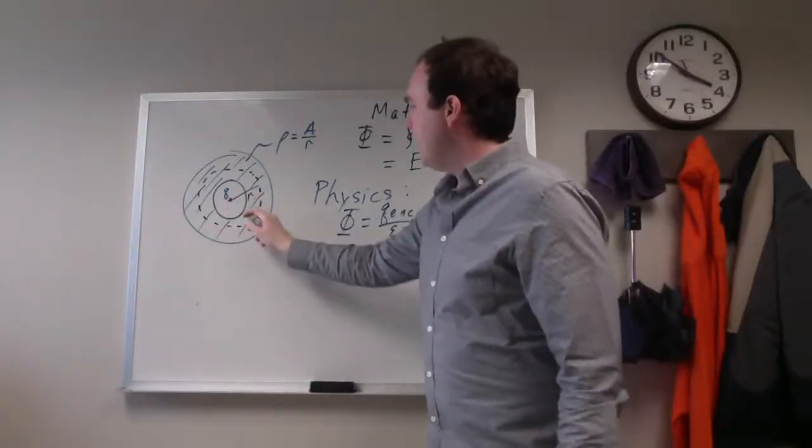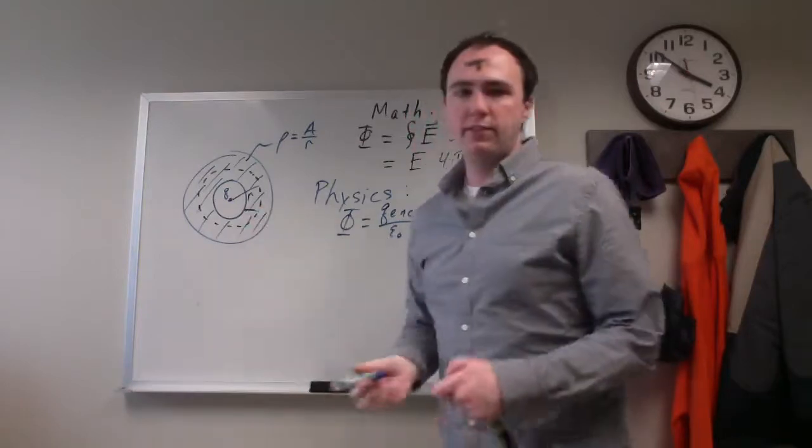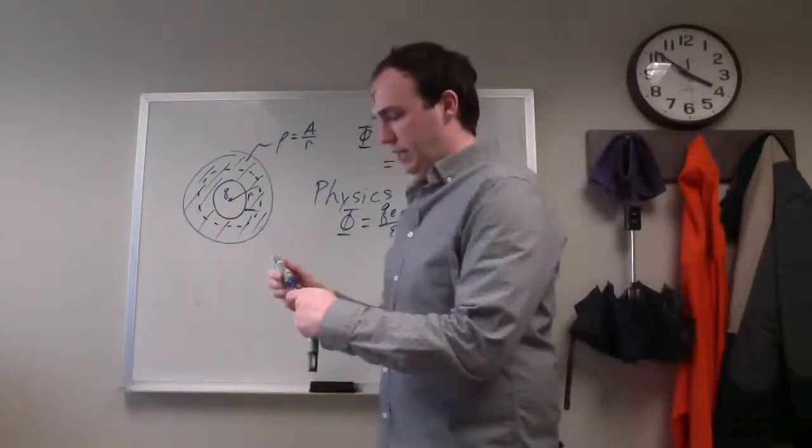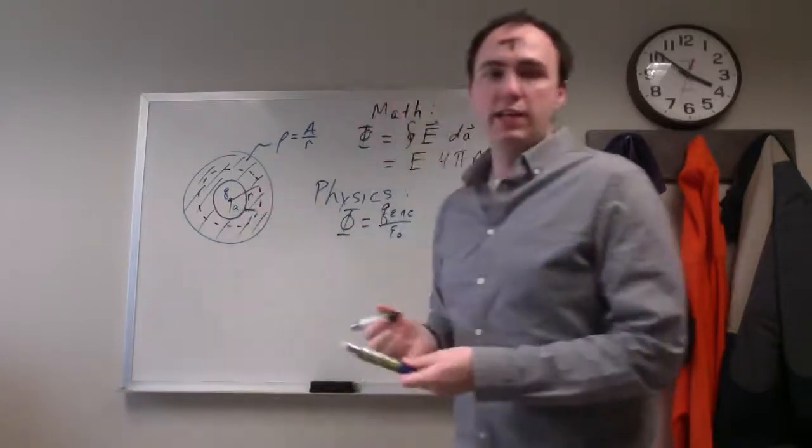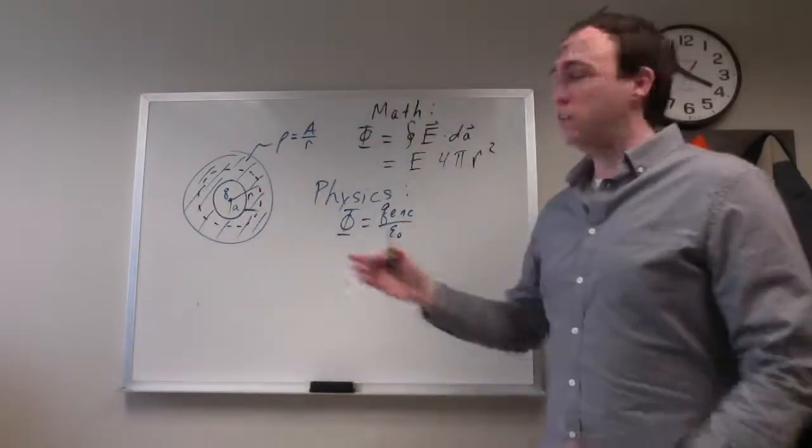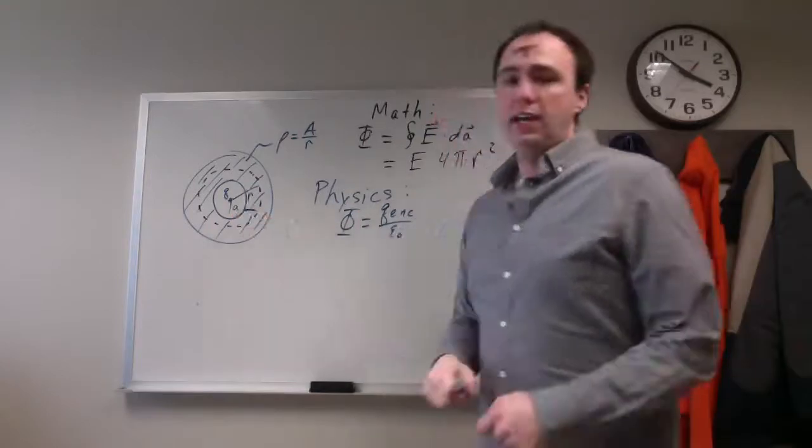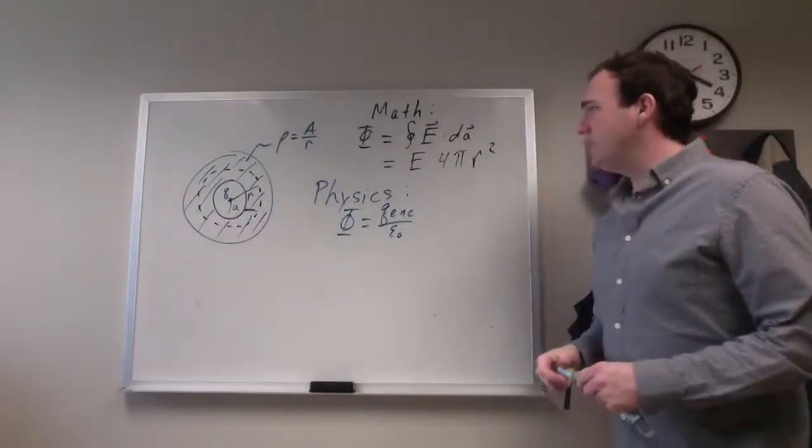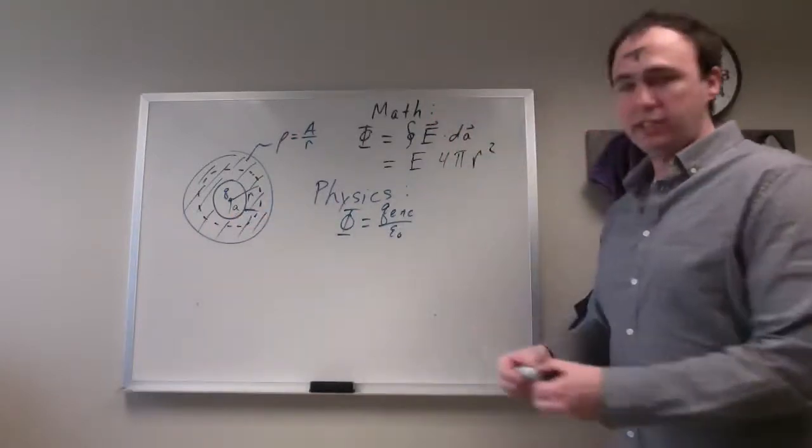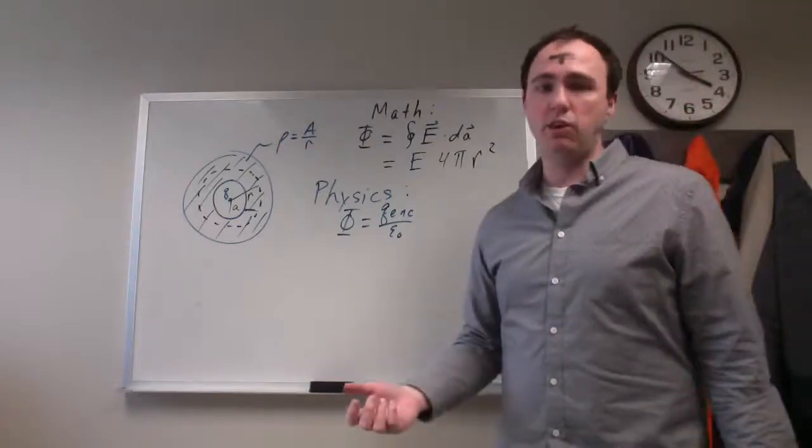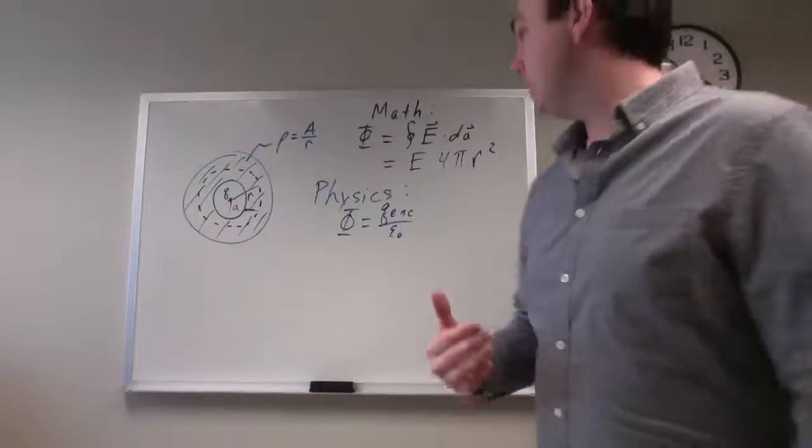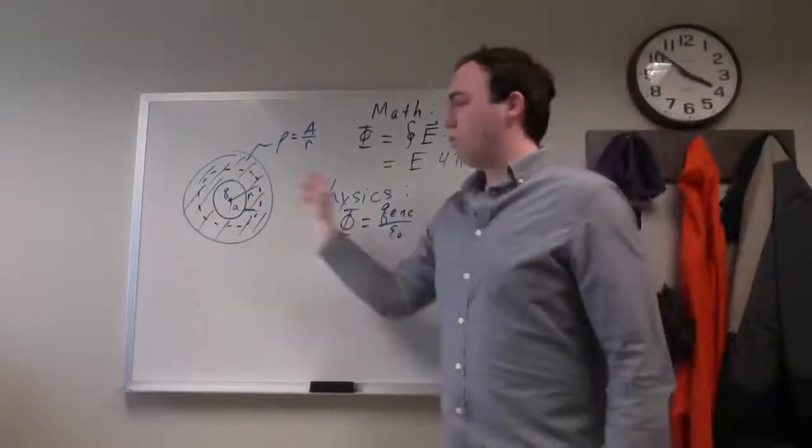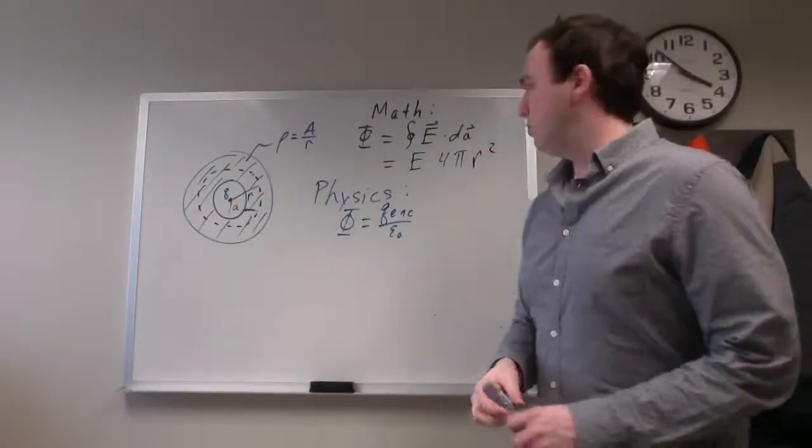And then you have to say, how much charge do I have in this region between, and I believe in the problem, this inner radius is given as lowercase a. So, how much charge do I have in this region between a and r? Well, you can't just, so what we normally did was we took rho times the volume, but now you can't just do that multiplication because rho is changing as you go farther out.